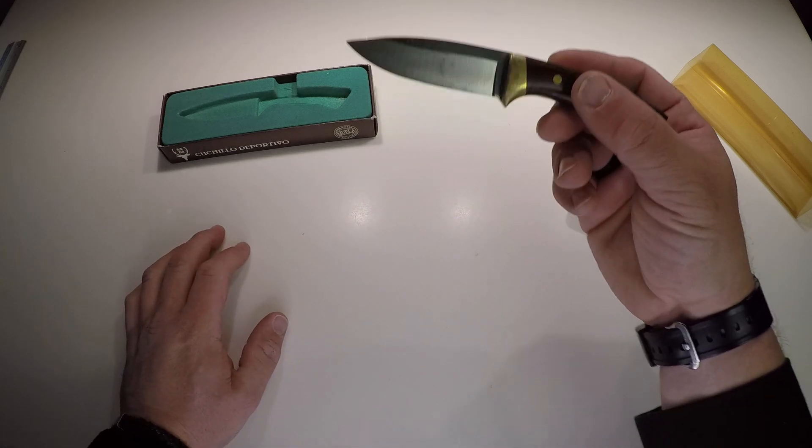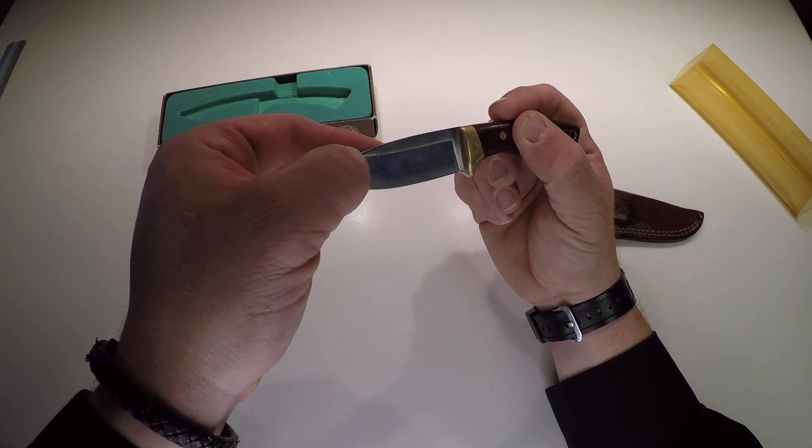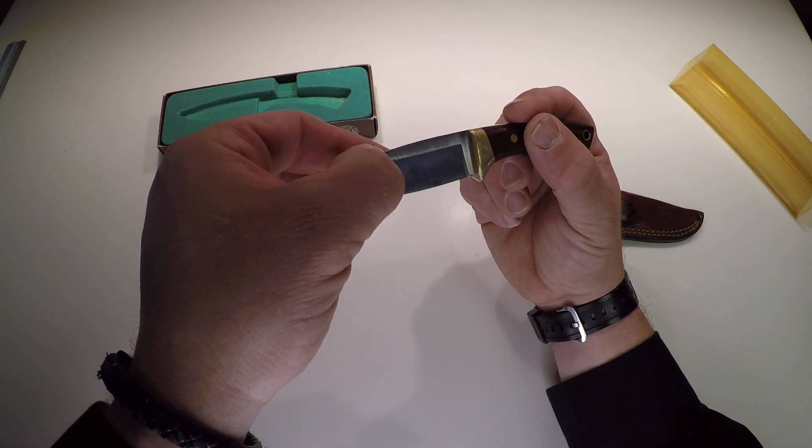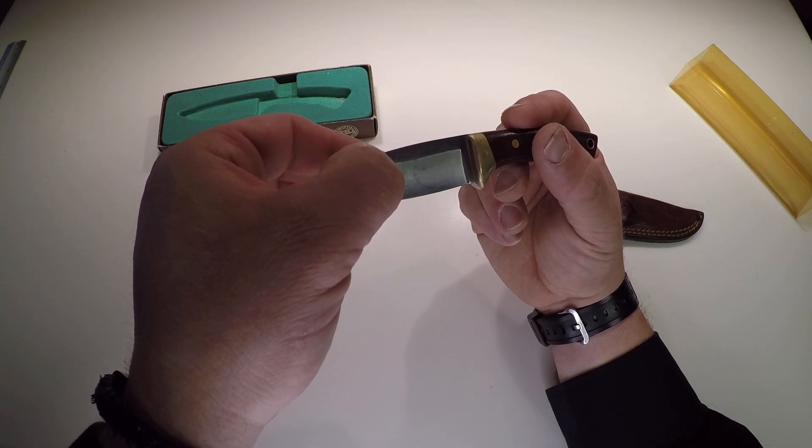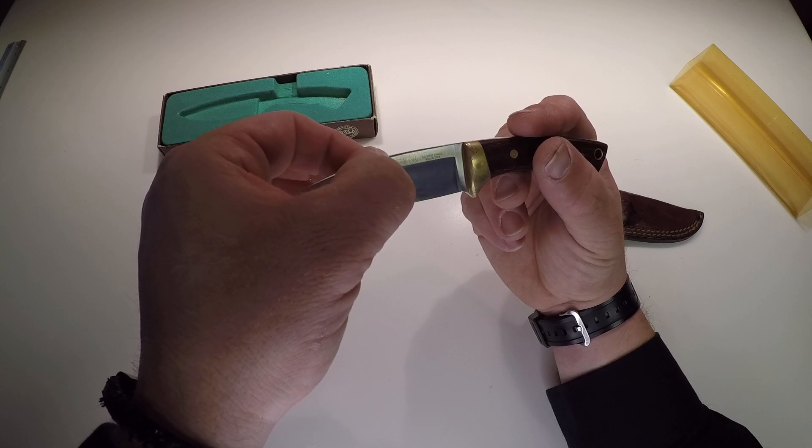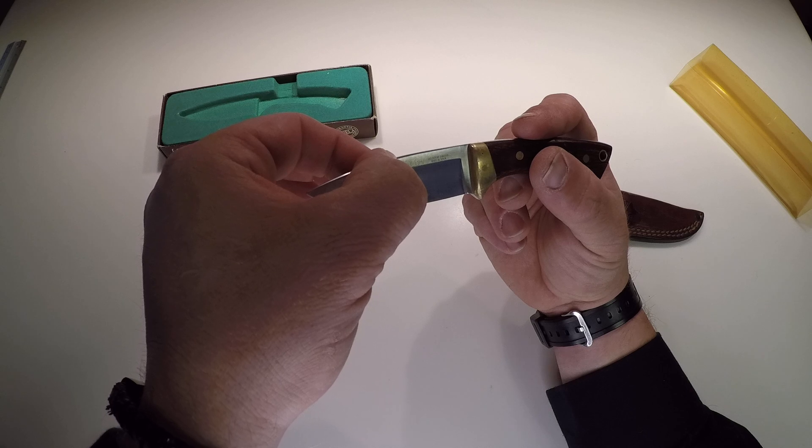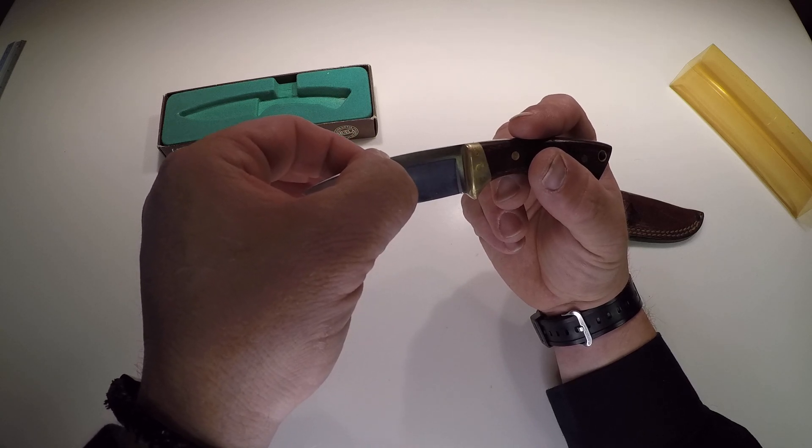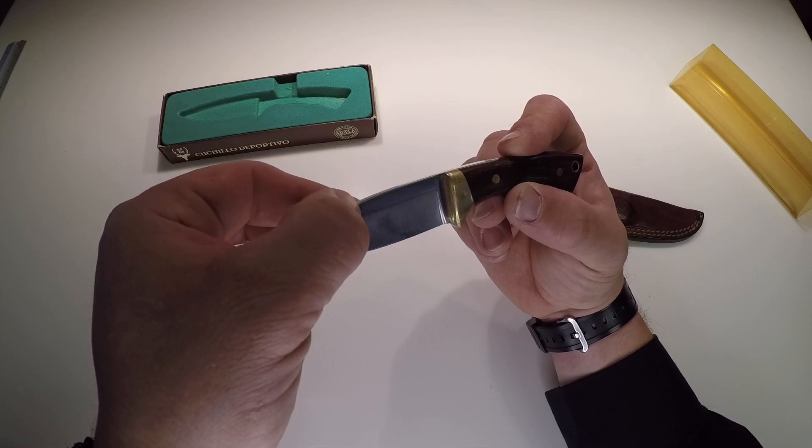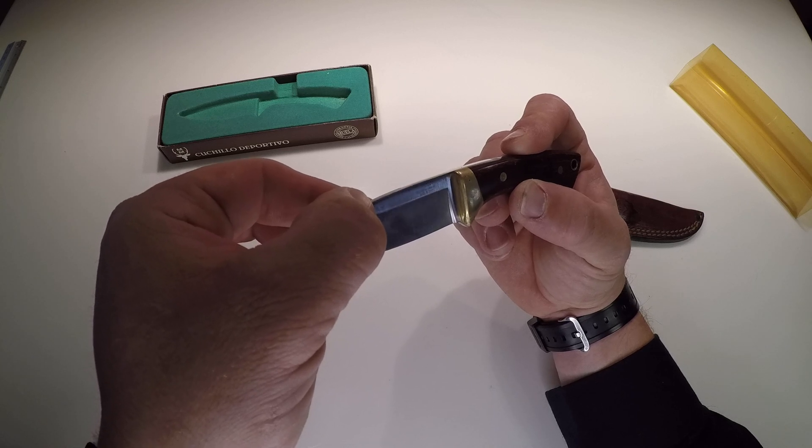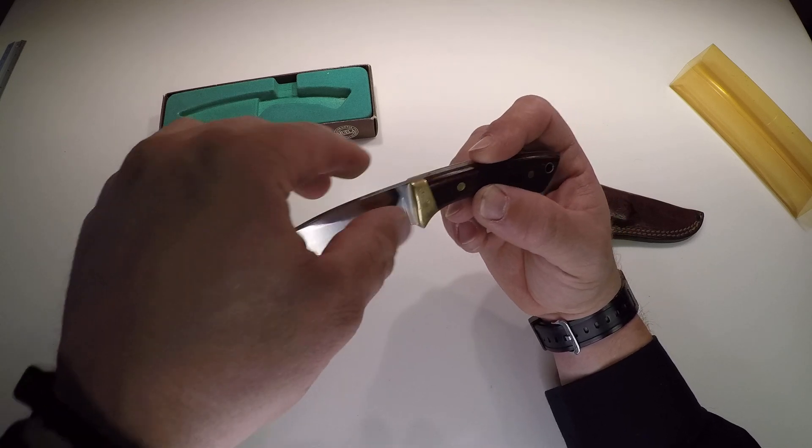It's small. What does it say? Muela. Muela. M-U-E-L-A. Muela. C. Colibri. Colibri. C-O-L-I-B-R-I. Yeah. Spain. Made in Spain. So it's a Spanish knife.